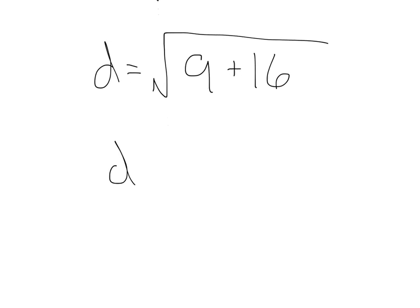Keep on simplifying. That's going to be d equals the square root of 25. And we know the square root of 25 is 5. So our distance is going to be 5 units.